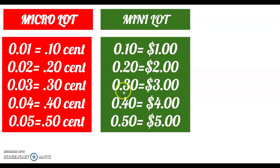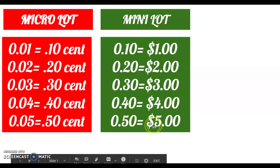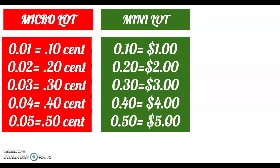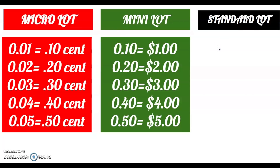Y'all get it, right? 0.30 is $3, 0.40 is $4 per pip, and 0.50 is $5 per pip. So you got recess, you got PE, and then this right here is called bringing me to my knees — because this right here ain't going to play with you.